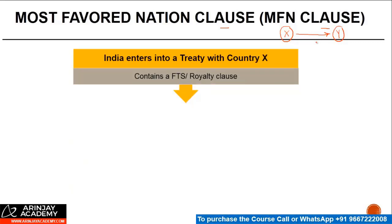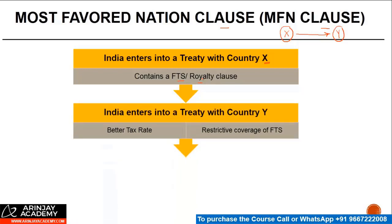So for example, India enters into a treaty with country X, which contains a clause relating to royalty and FTS. Subsequently, India enters into a treaty with country Y and the rate of royalty taxation. Let's say the rate of royalty taxation here is 15%. In this new treaty that India has entered into, it says the rate of taxation will be 10%, or there is a restrictive coverage of FTS.